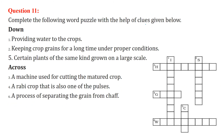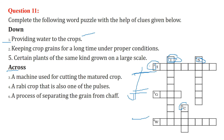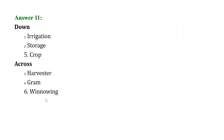Complete the word puzzle with the help of clues given. Providing water to the crops — starting with I — is irrigation. Keeping crop grains for a longer time under proper conditions — starting with S — is storage. Certain plants of the same kind grown on a large scale is crop. A machine used for cutting the mature crop is harvester. A Rabi crop that is also one of the pulses is gram. The process of separating the grain from chaff is winnowing.